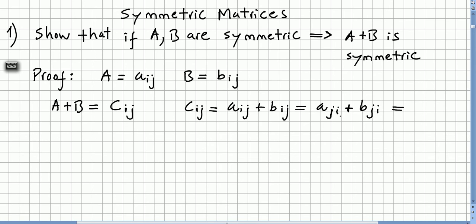So what is a_ji plus b_ji? That will be c_ji. So c_ij is equal to c_ji.